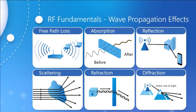The next effect is absorption — exactly what it sounds like: energy gets absorbed from the wave, which impacts the amplitude. The signal ends up less powerful, but the frequency and wavelength remain the same. Different obstacles absorb different amounts of energy. Some may absorb only 1 to 5%, while others may absorb 100% of the signal. Obstacles to consider include walls, people, weather conditions, and different materials like drywall, wood, and concrete, which all absorb varying amounts of energy.